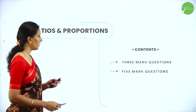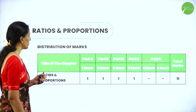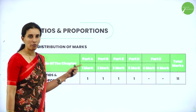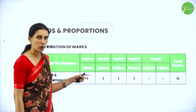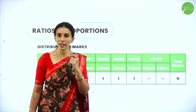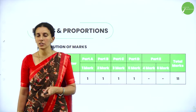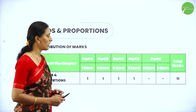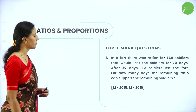Before that, let's look at the distribution of marks from this chapter: 1 one-mark, 1 two-mark, 1 three-mark, 1 five-mark — total 11 marks from this chapter. Let's see the 3-mark question now.